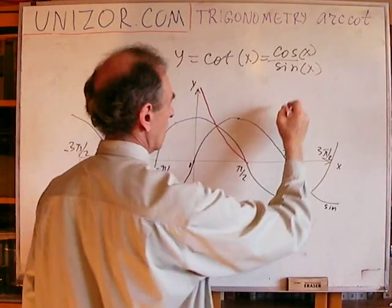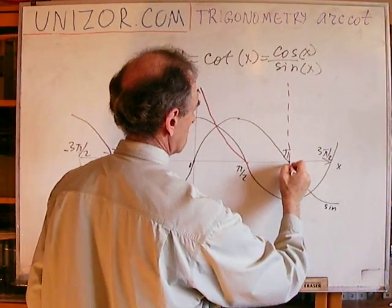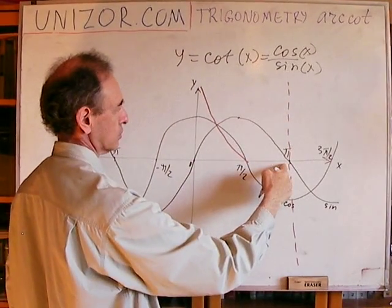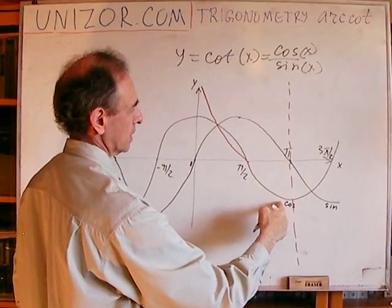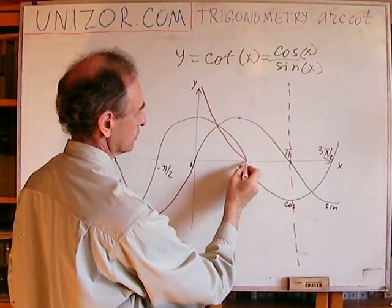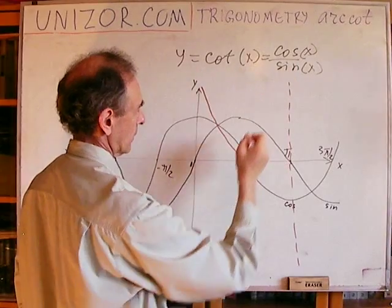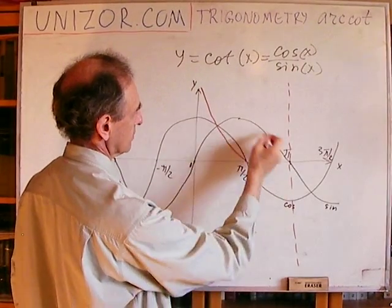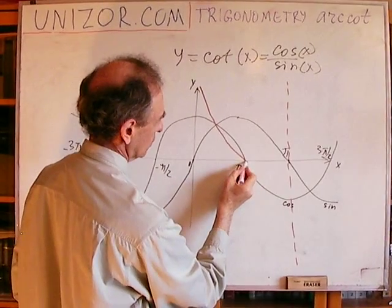And then, I have another asymptote at pi, when sine is again equal to 0. Now, cosine is around minus 1, which means, starting from this point, the result, the cotangent, would be negative, because the cosine is negative, and sine is positive. So, it will go like this.